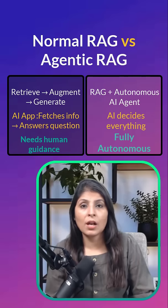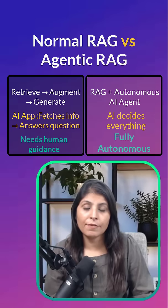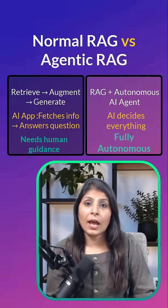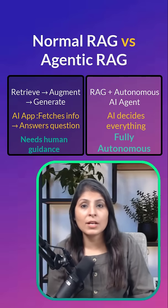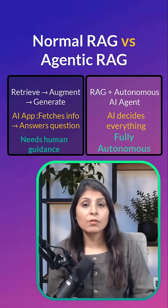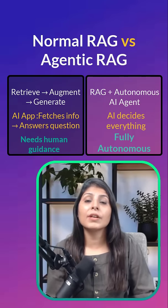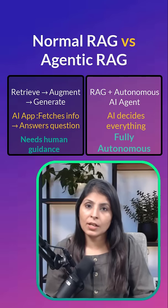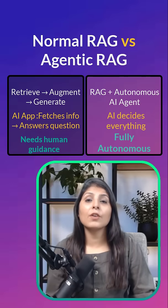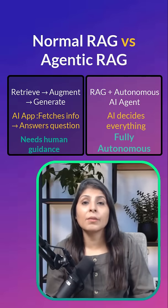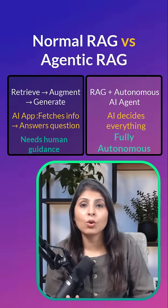Using the same example — 'What are the latest AI tools in 2025?' — with Agentic RAG, the AI agent can plan a search across multiple sources like websites, research papers, or company blogs. It then retrieves relevant data automatically, filters and prioritizes the most important tools, and generates an accurate summary — all without any human telling it what to do.